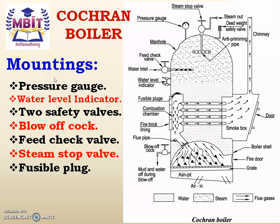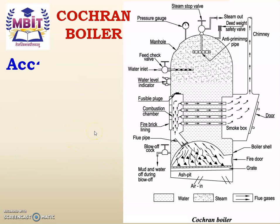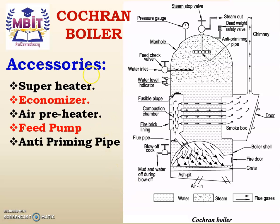The mountings coupled with the Cochran boiler are: pressure gauge, water level indicator, safety valves, blow-off cock, feed check valve, steam stop valve, and fusible plug. Optional accessories that can be connected to the Cochran boiler are: superheater, economizer, air preheater, feed pump, and anti-priming pipe.